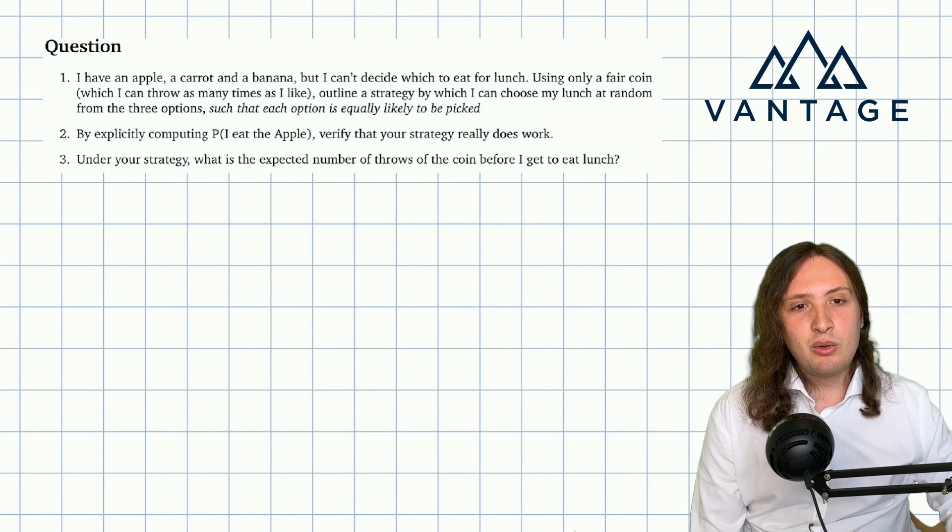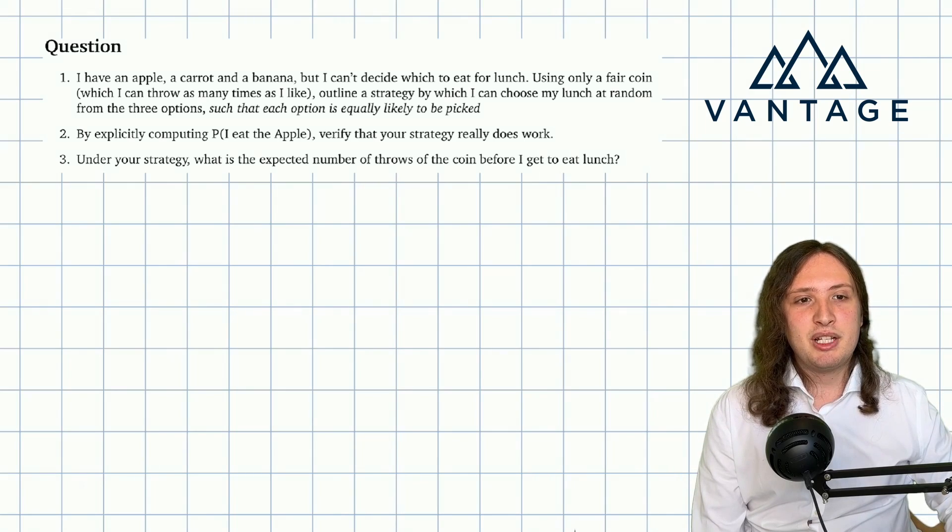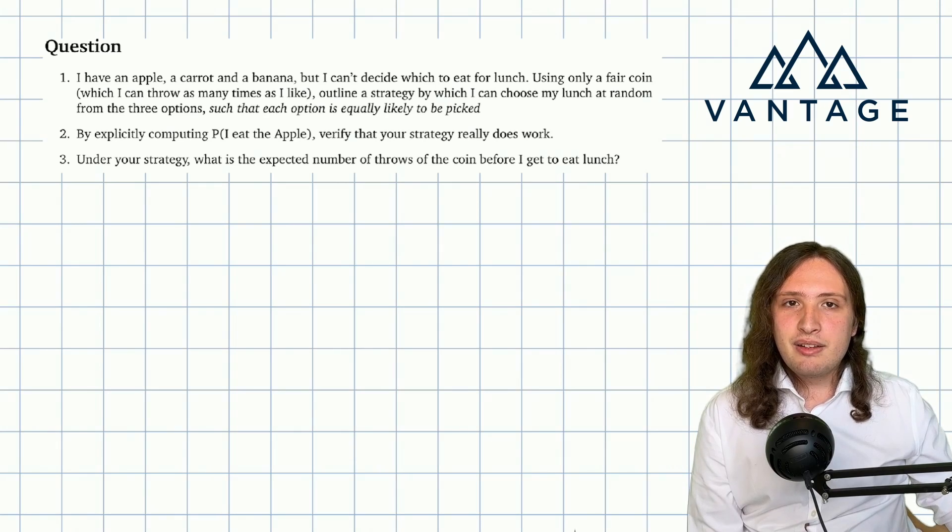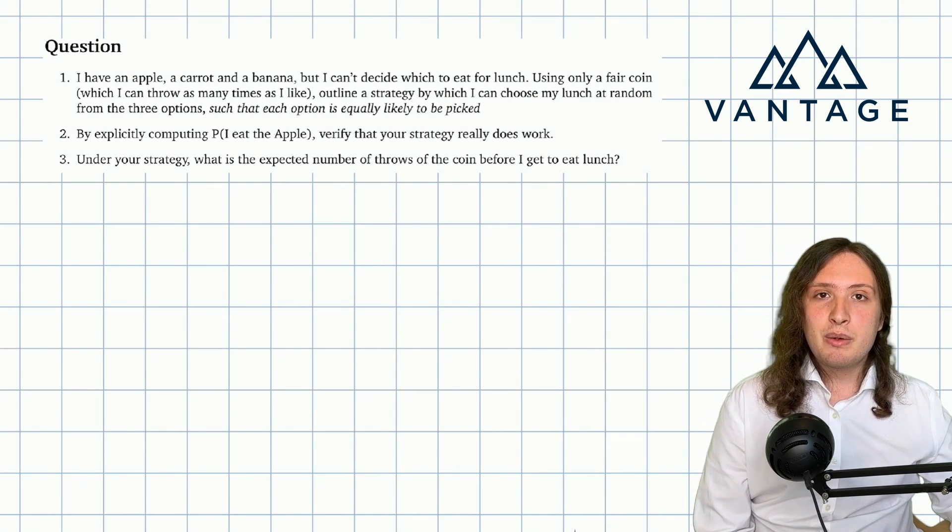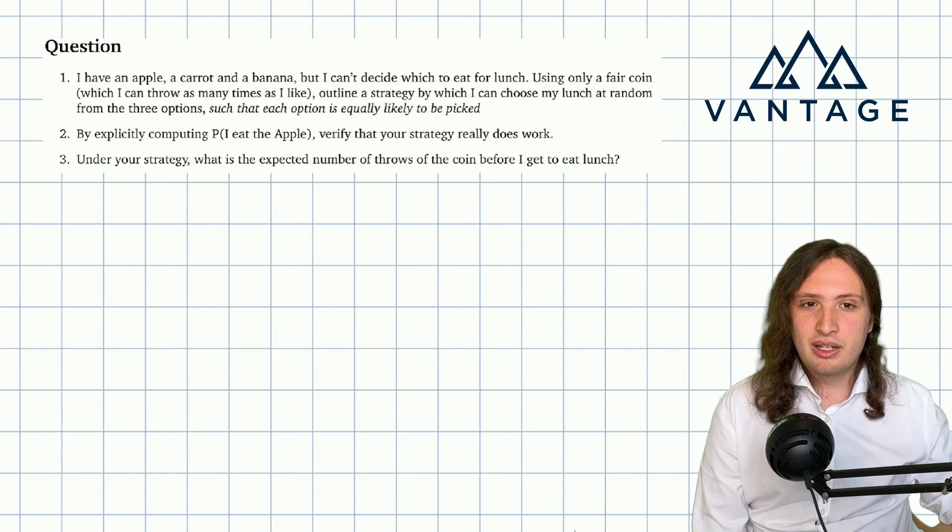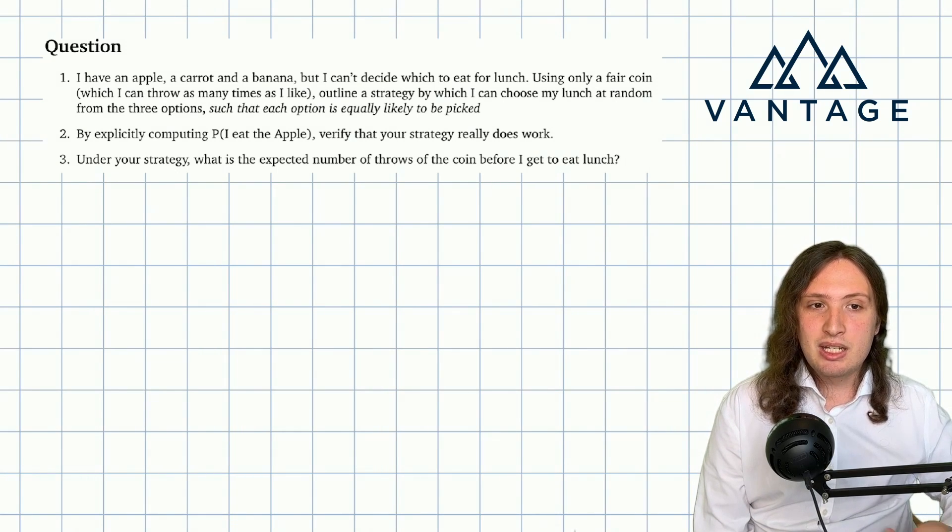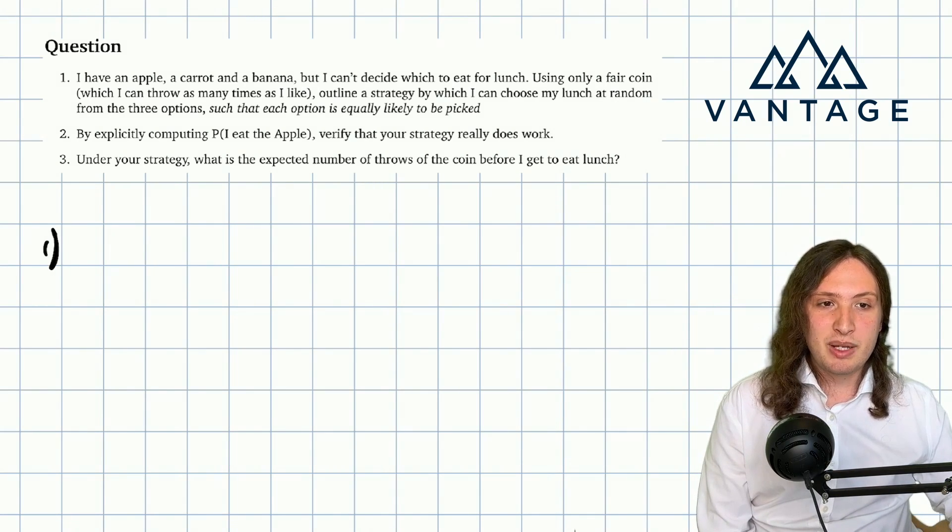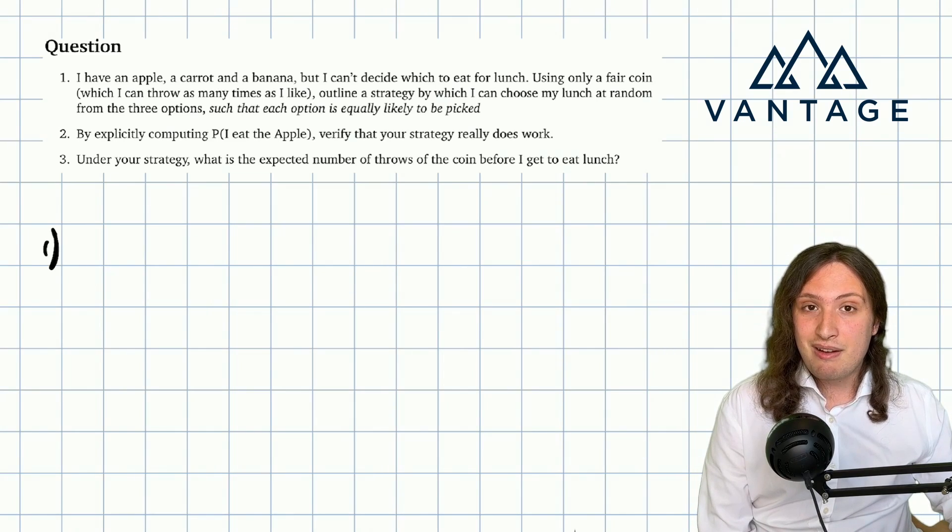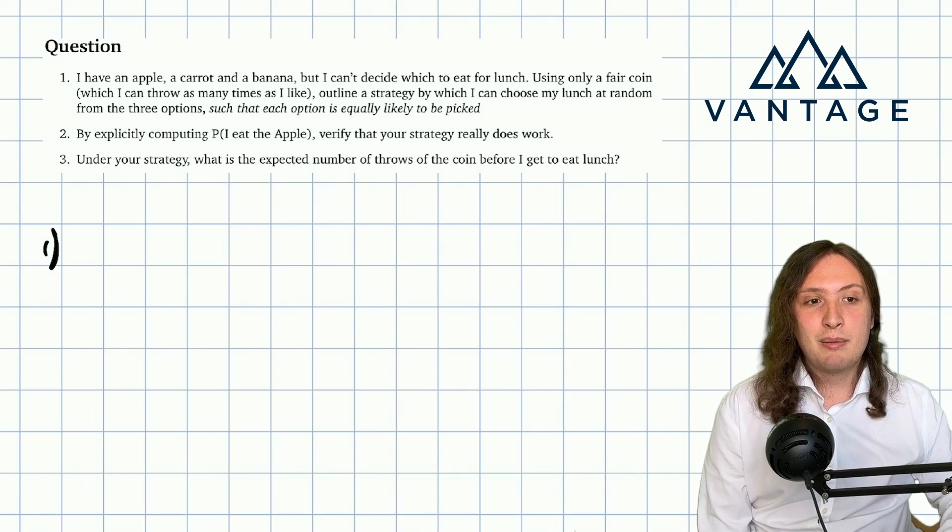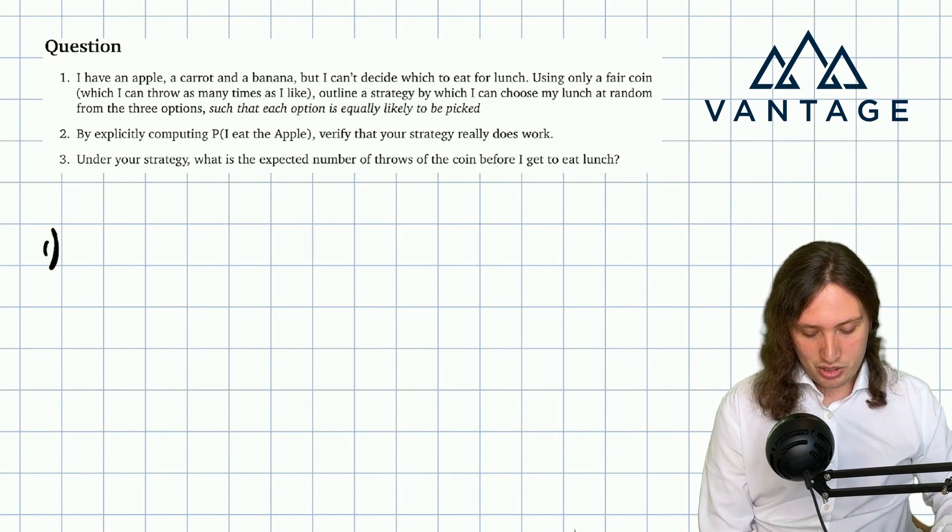So in this question, our student was told that we have an apple, a carrot and a banana, but we can't decide what to eat for lunch. Using only a fair coin, which we are allowed to throw as many times as we want, we need to develop a strategy which will let us choose our lunch at random such that each option is equally likely to be picked. And then in part two and three of the problem, we're going to do some things with our strategy. We're going to explicitly verify it that it works, and then we're going to calculate an expected number of throws of the coin until we get to eat our lunch.